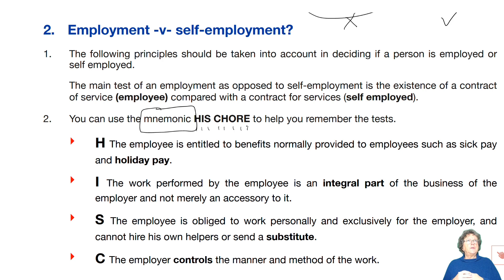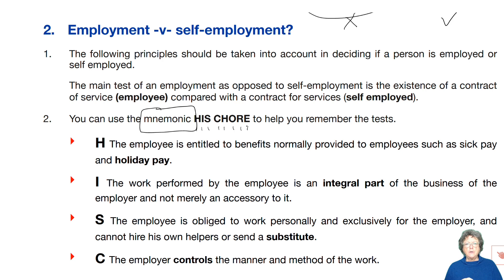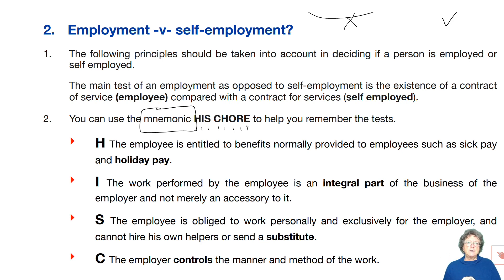These principles are taken into account to decide whether somebody is employed or self-employed. At the time of recording, there are several cases going through law, one of them being Uber drivers — whether Uber drivers are technically self-employed, which is what Uber says, or whether they are employees. The same goes for delivery riders such as Deliveroo. Are they employed or self-employed? There are legal cases ongoing in the UK regarding those situations that you may want to look up.